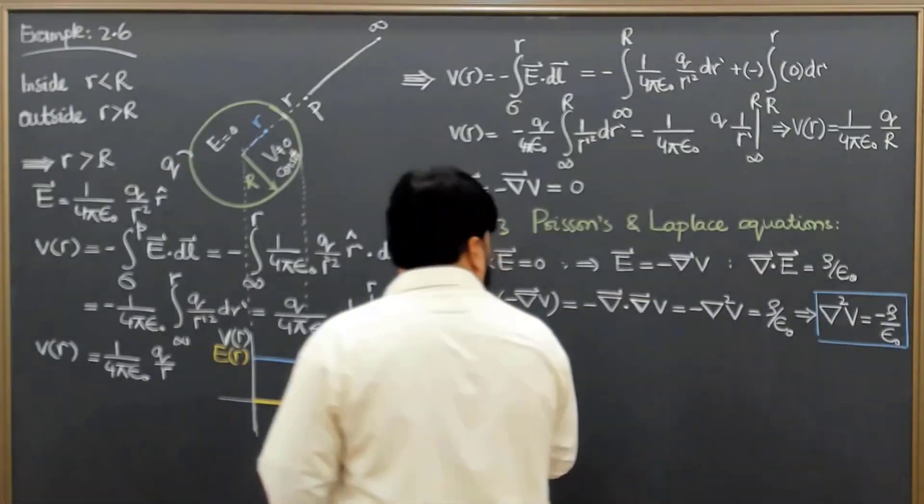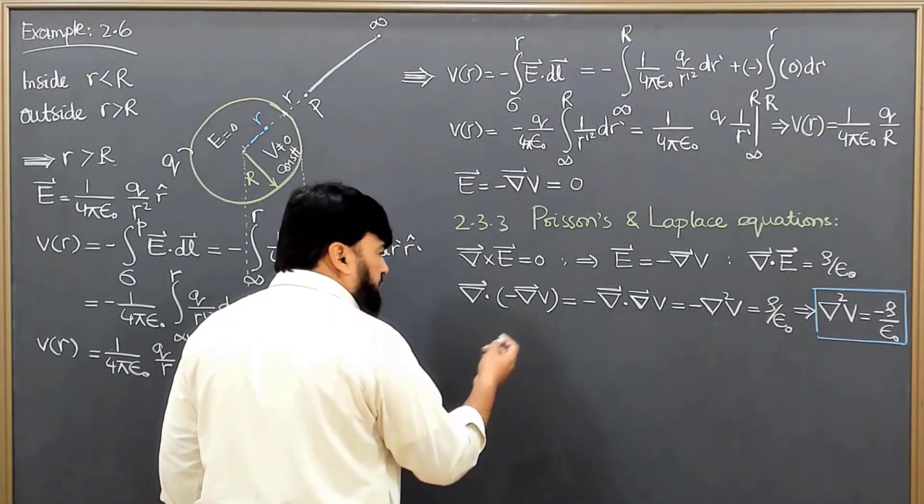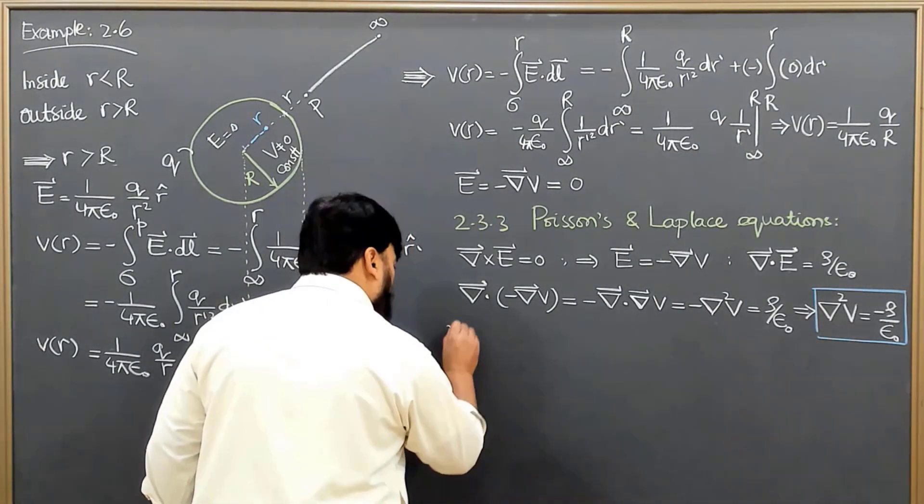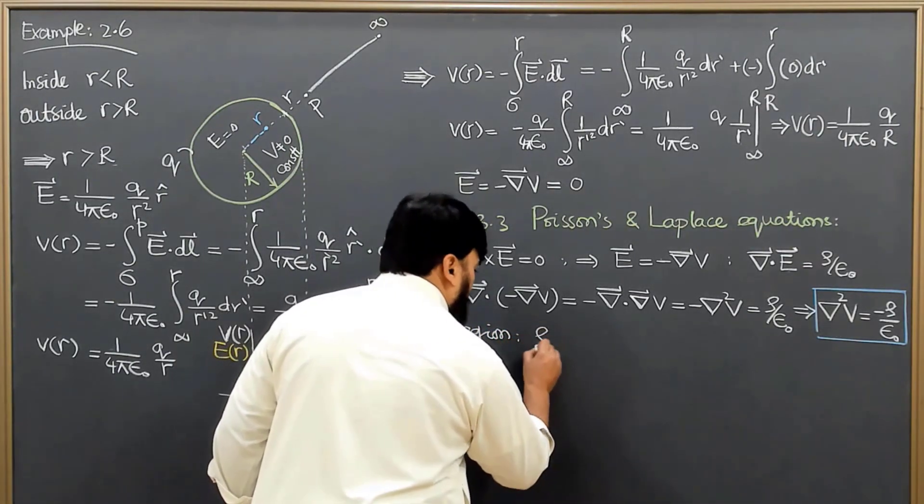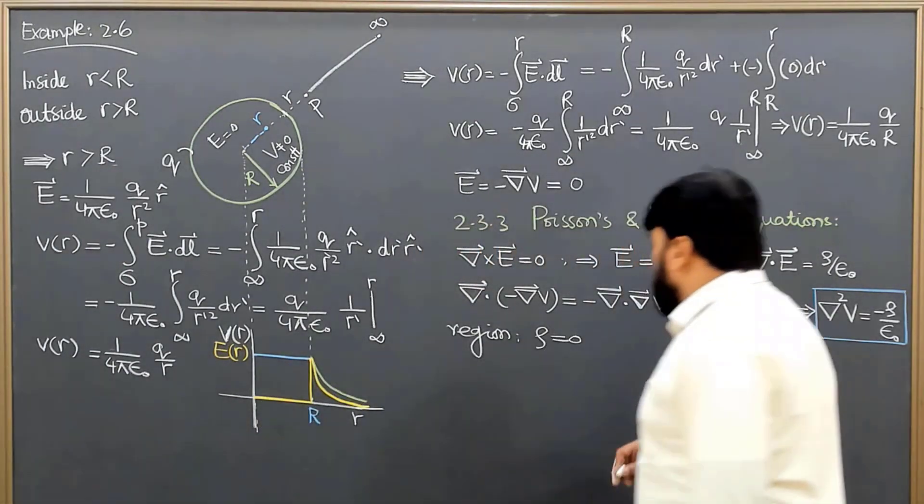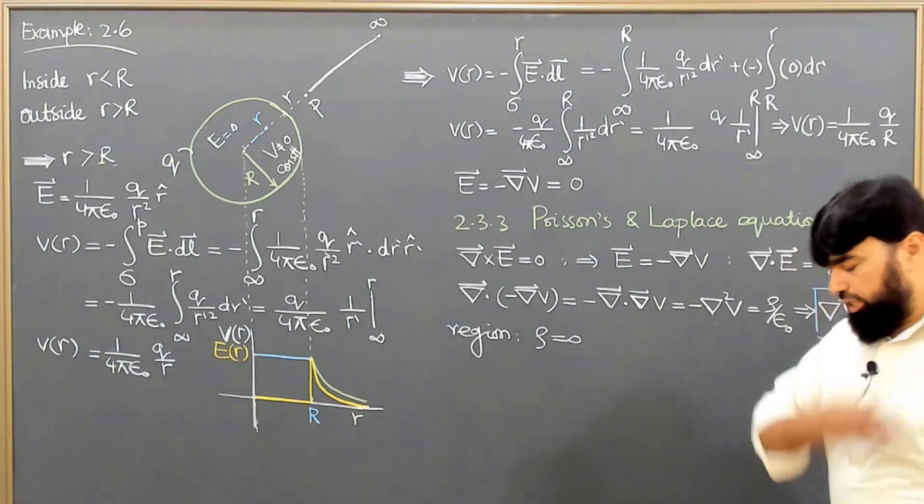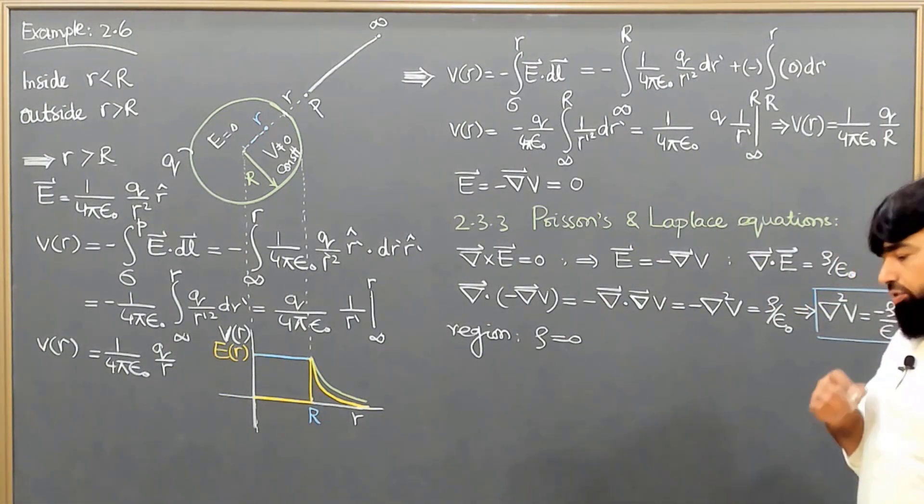Similarly, if our observation is in a region where we don't have any charge distribution, like the charge distribution is not there in a region where we are observing things, for example...